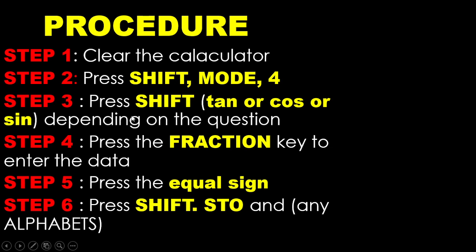Finally, these are the steps we were following. First, clear your calculator. Second, change the degree mode into radian mode: press Shift, Mode, and choose Option 4. Third, press Shift and then tan, cos, or sin — whatever the question gives you, you enter the inverse of it. Fourth, press the fraction key to enter the data. Fifth, press the equal sign, then save your result by pressing Shift, Store, and then any of the alphabet keys. Thank you, and this is the end of this video.